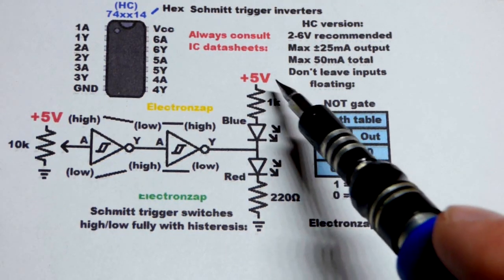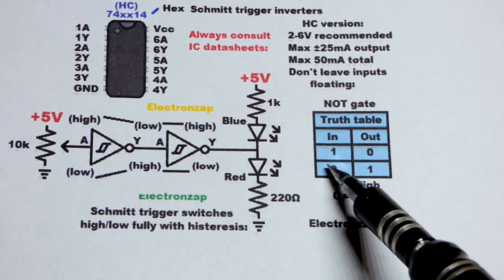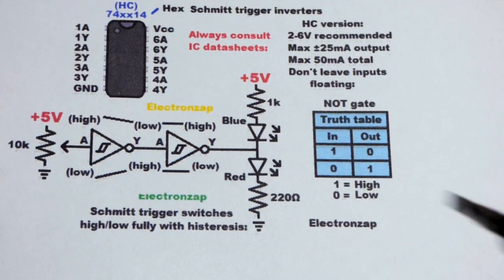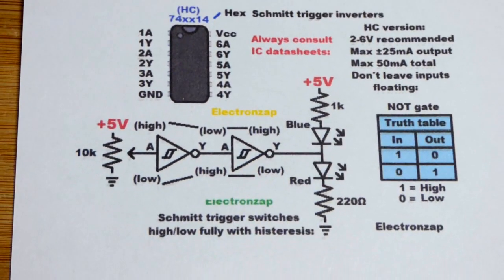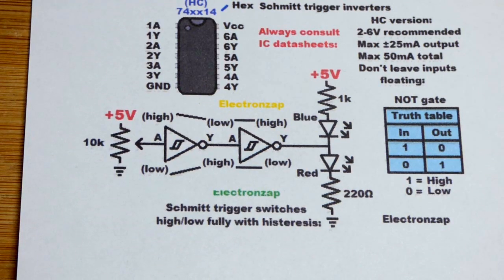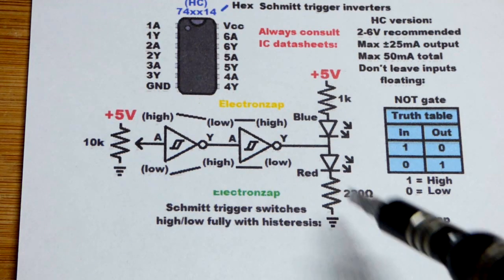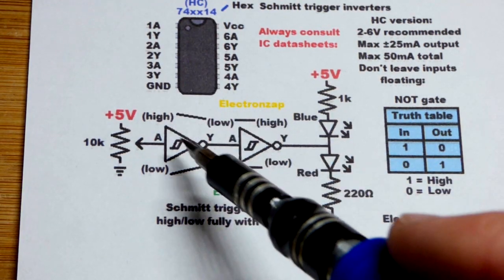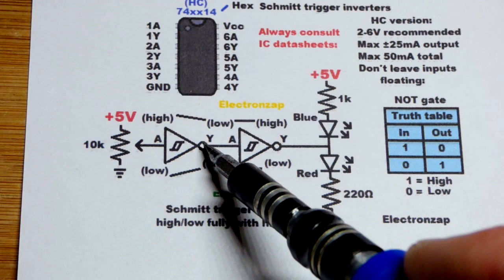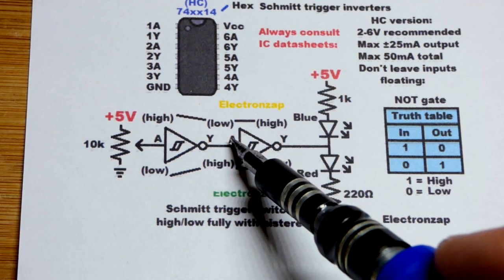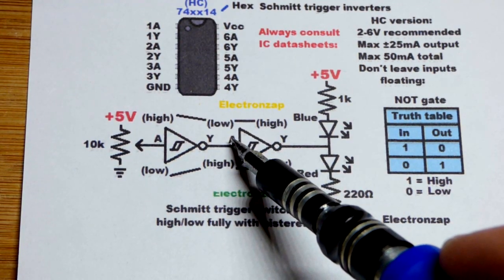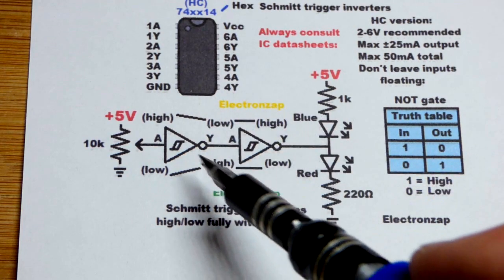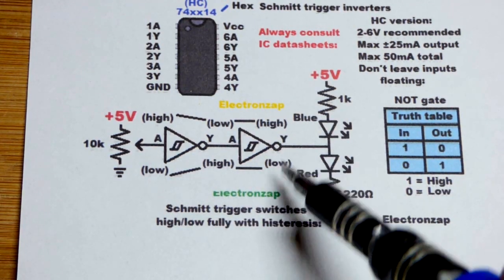In this case, 1 means somewhere around 5 volts. 0 means somewhere around 0 volts or ground. For the circuit though, we are not going to have an output that is inverted from the input because we're going to take two of them. You can combine logic gates however you want to make a different logic gate.